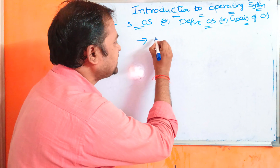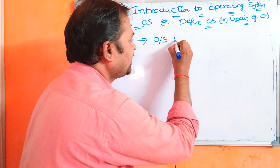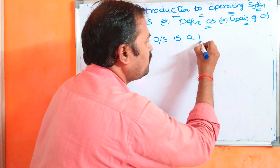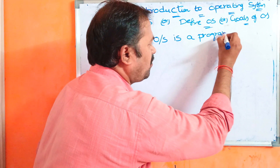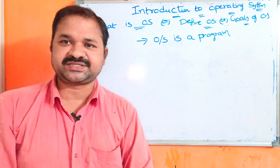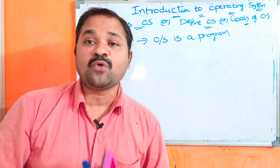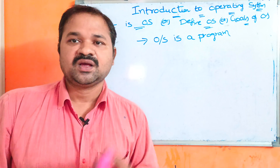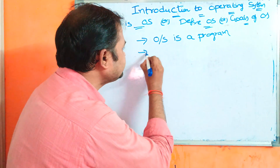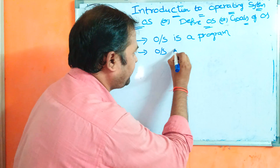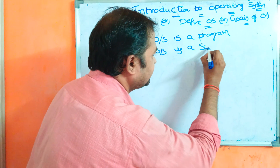An operating system is nothing but a program. A program contains a set of related instructions — a collection of instructions. A program means a software. So an operating system is called a software.